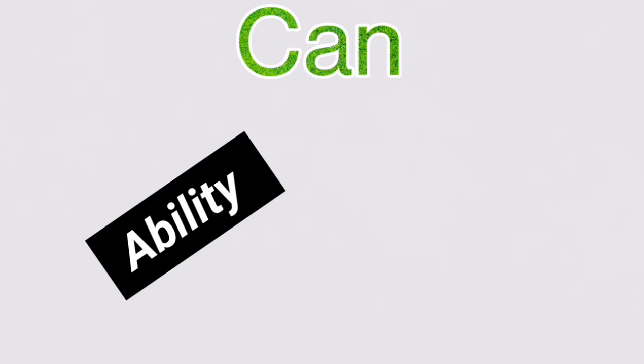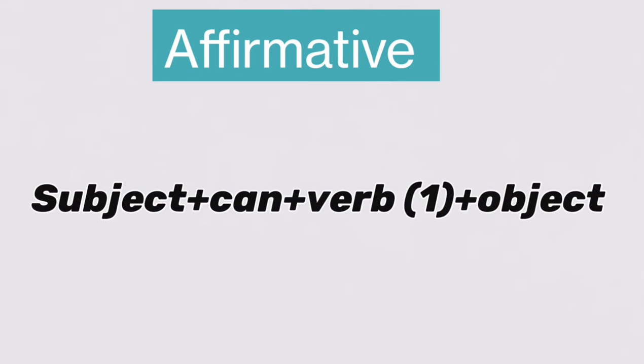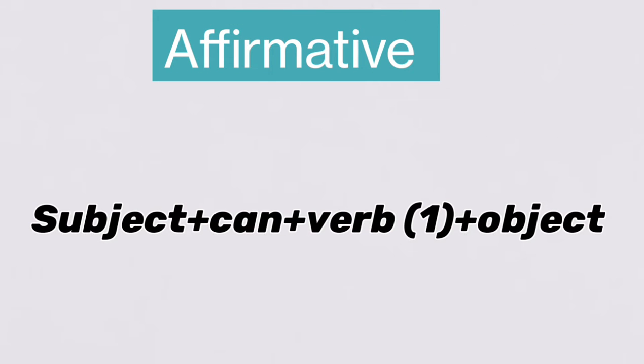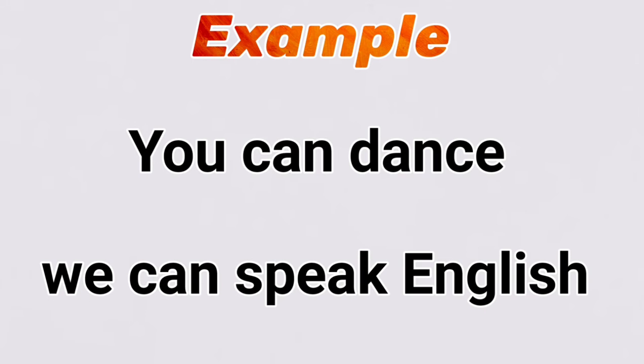Can is used for ability and permission. Now see the structure of an affirmative sentence: subject plus can plus first form of verb plus object. Now see some examples. You can dance. You can speak English.